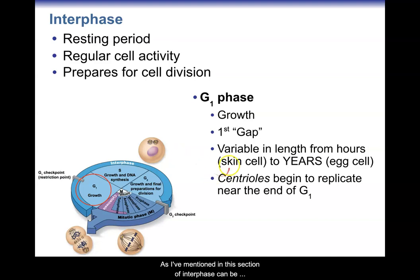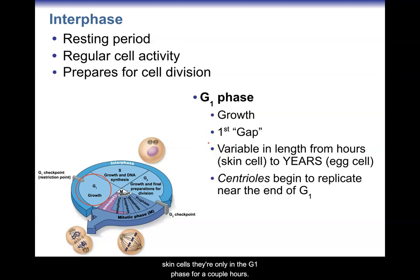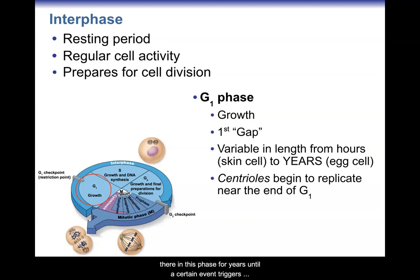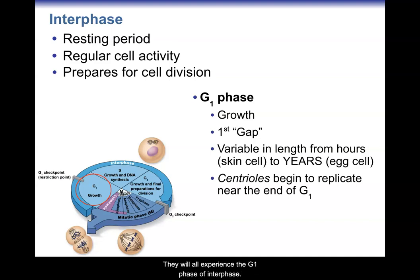This section of interphase can be quite variable depending on the cell type. Some cells that like to replicate often, such as skin cells, are only in the G1 phase for a couple of hours before moving on. Egg cells like ova in females are in this phase for years until a certain event triggers the cell cycle to move forward. All cells will experience the G1 phase of interphase. Centrioles begin to replicate during G1, which is part of how the cell prepares for division.